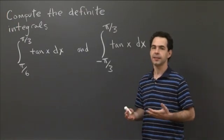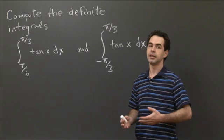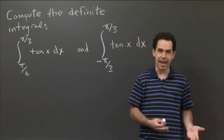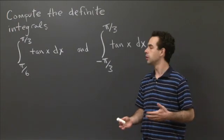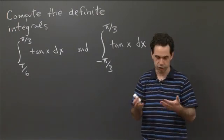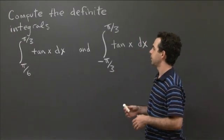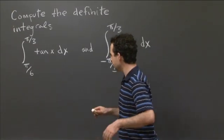So the fundamental theorem of calculus says, when you have a definite integral, instead of computing Riemann sums, what you can do is compute an antiderivative and use the antiderivative to find out what the integral is. Just compare two values of the antiderivative, and that'll give you the value of the definite integral.